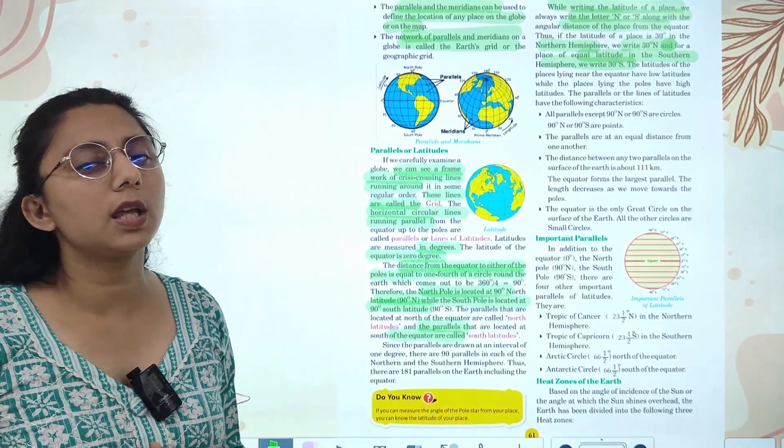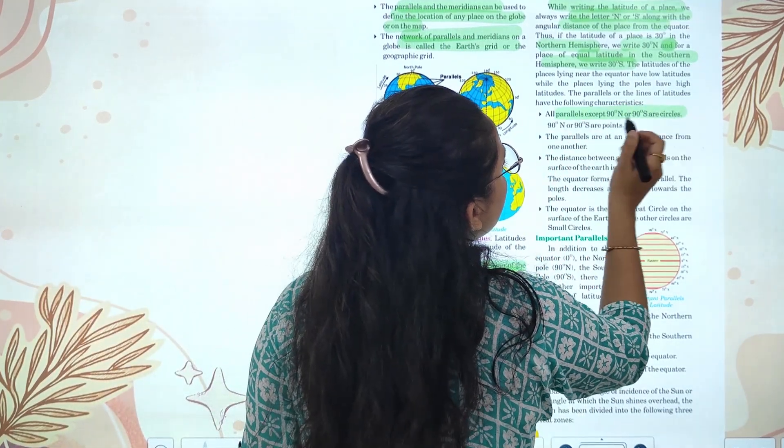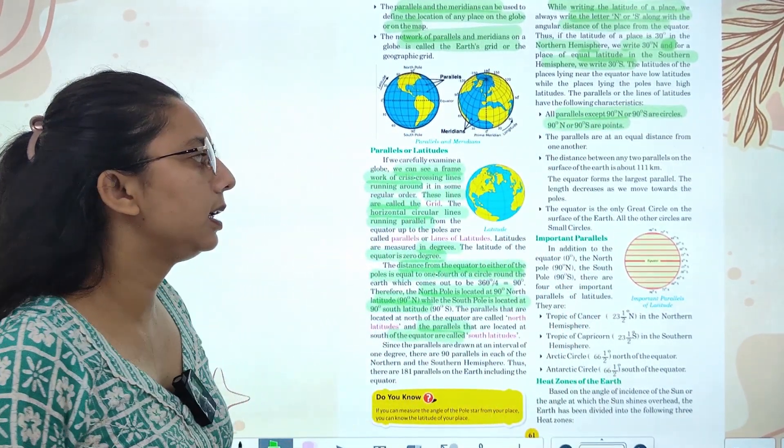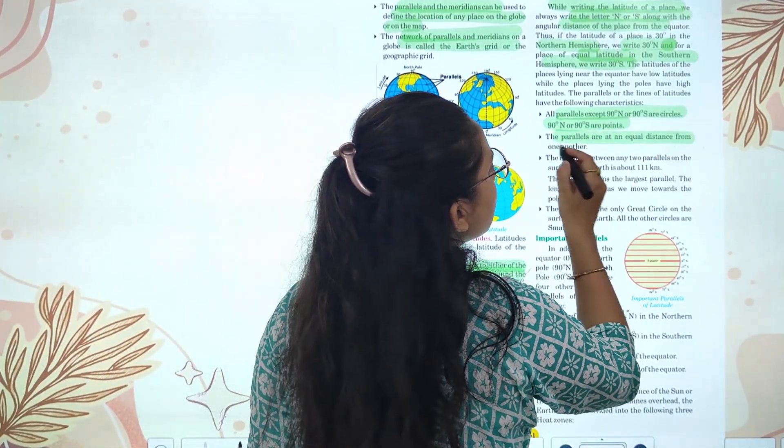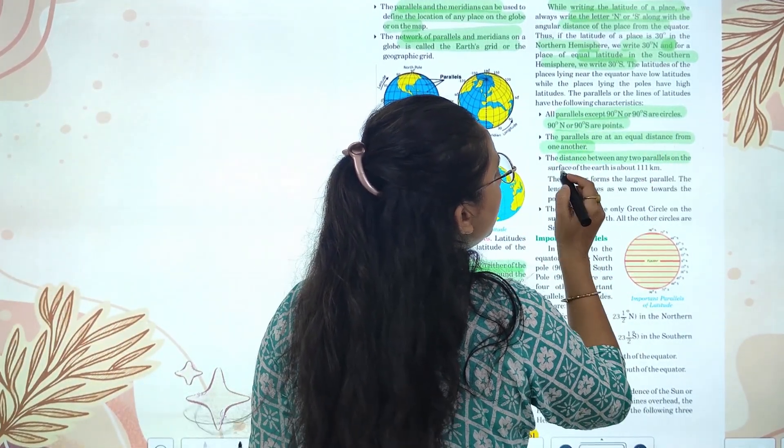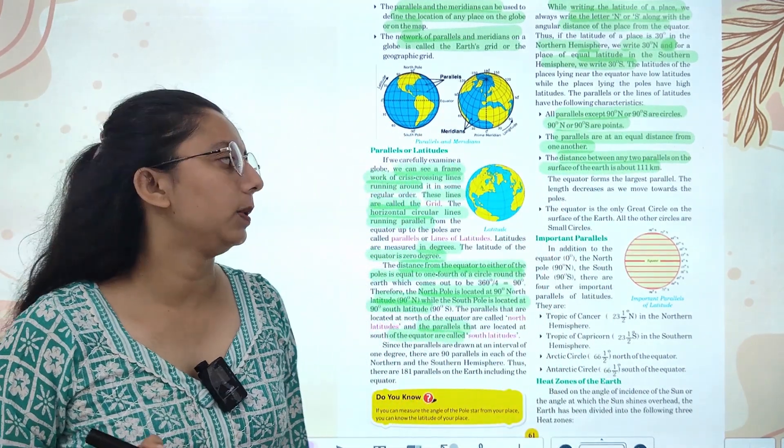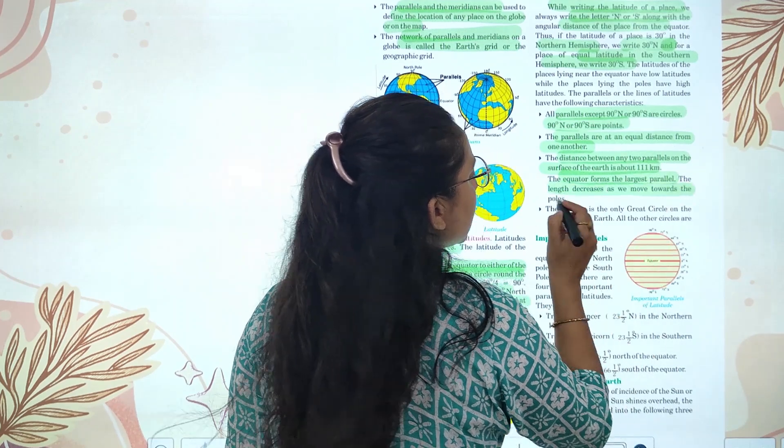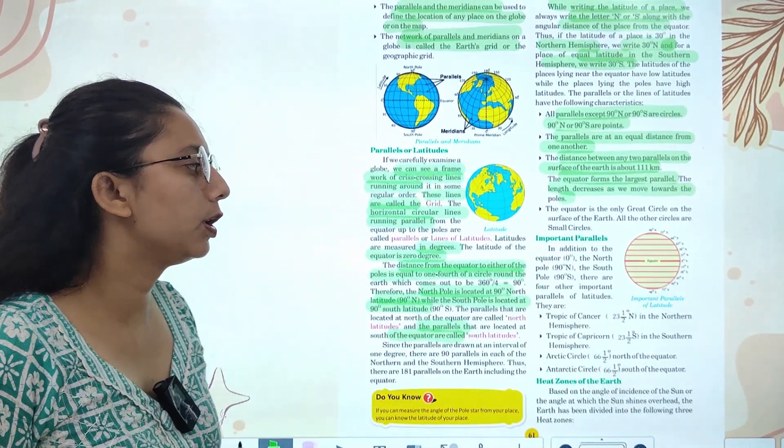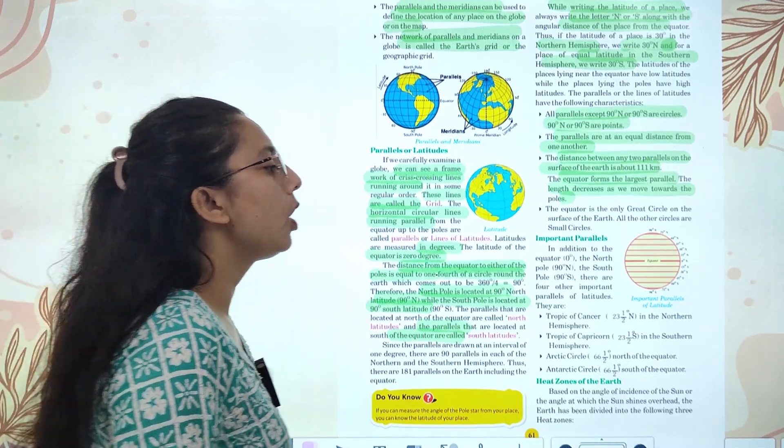Now we will see some characteristics of parallels. All parallels except 90 degrees north and south are circles. 90 degrees north and south are points or poles. The parallels are at equal distance from one another. Distance between any two parallels on the surface of the Earth is about 111 kilometers. Equator forms the largest parallel, then it decreases as you move towards the poles.